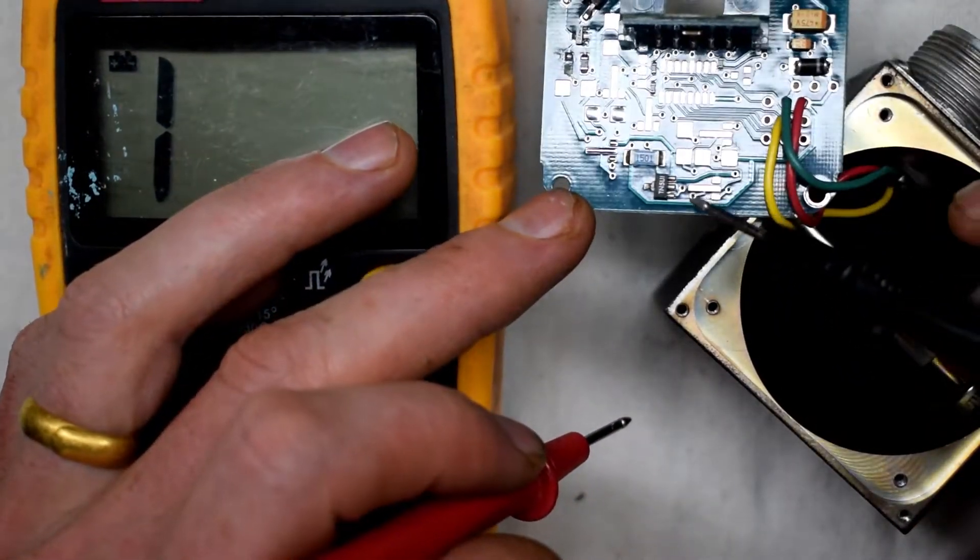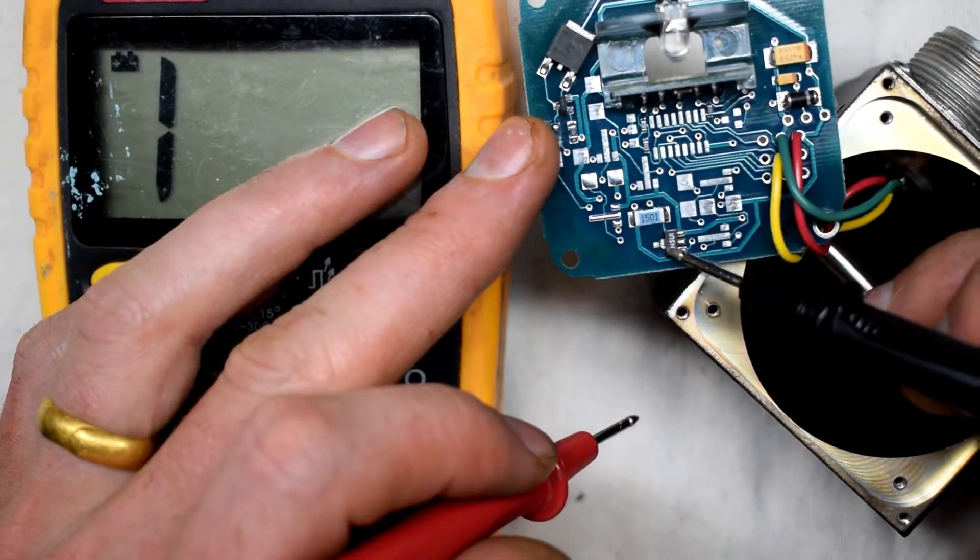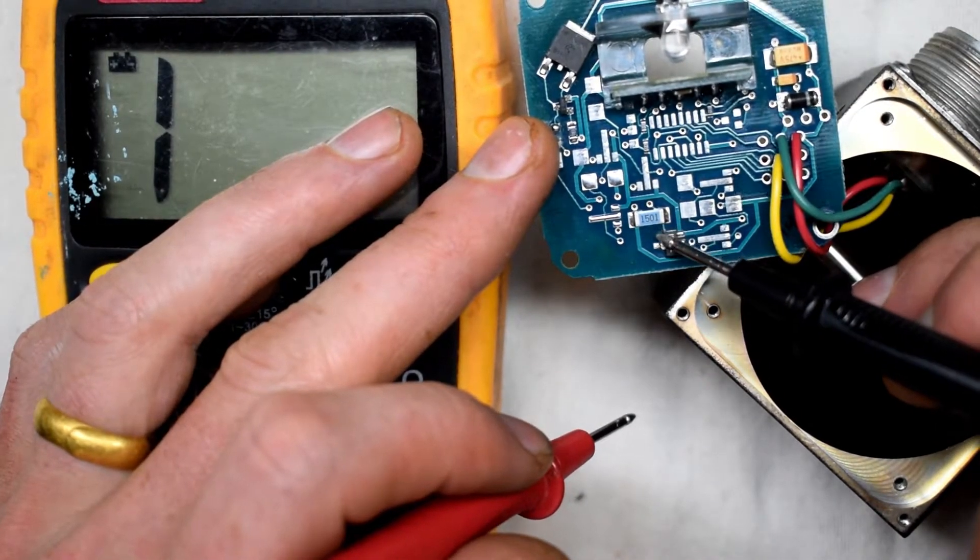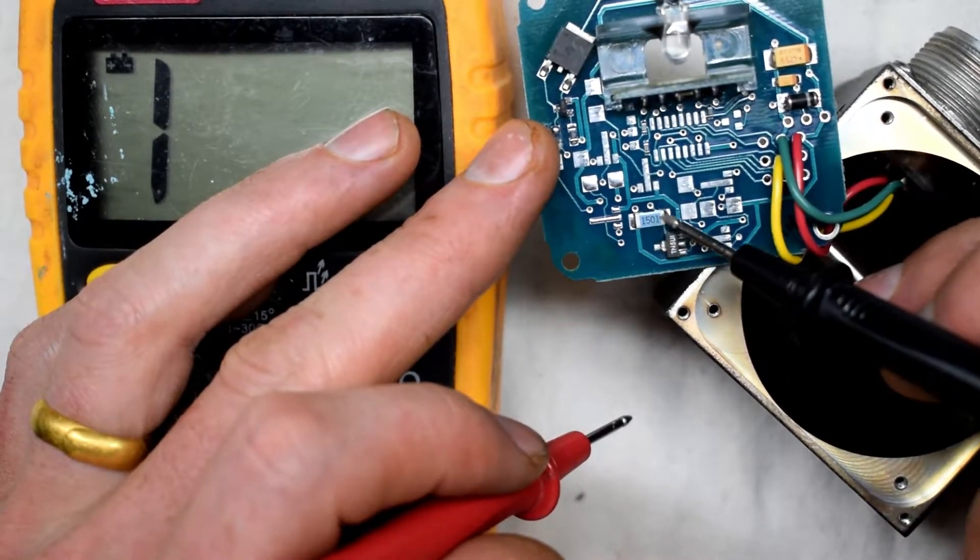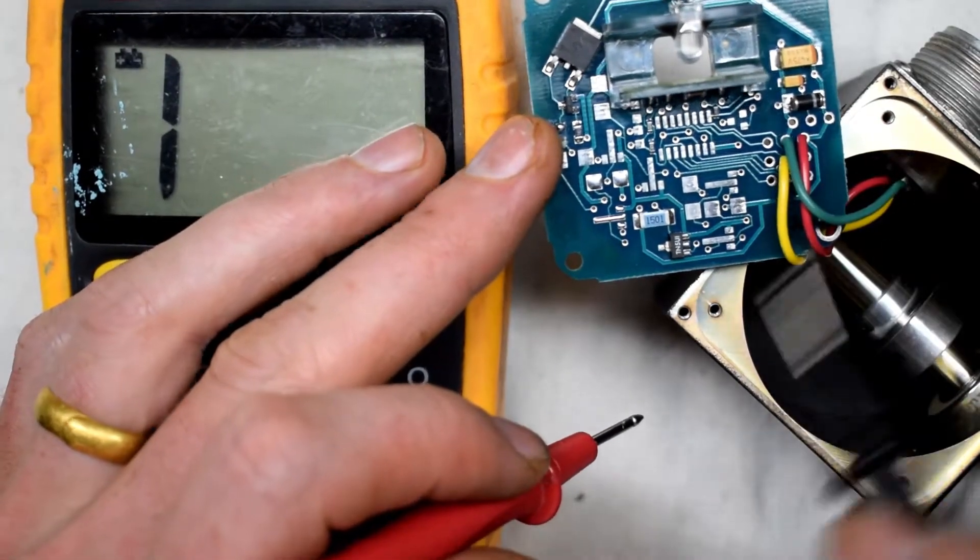Now down here we have another transistor and we also have a 1.5k ohm resistor, but usually those are fine.